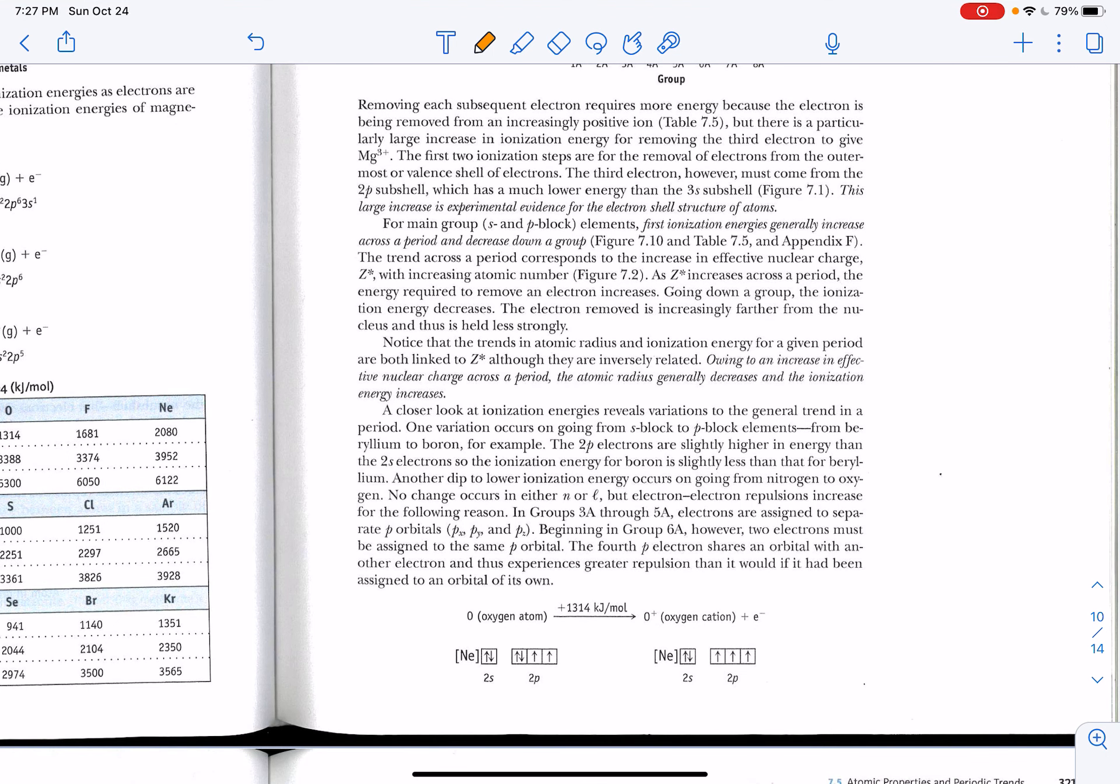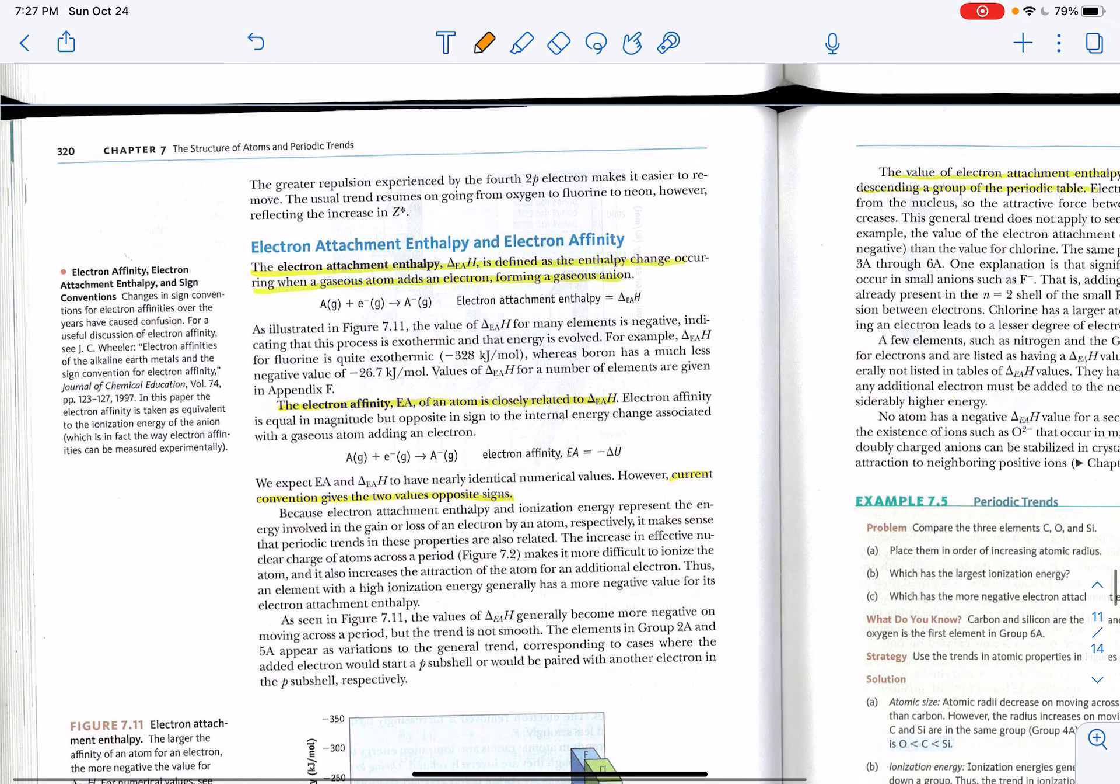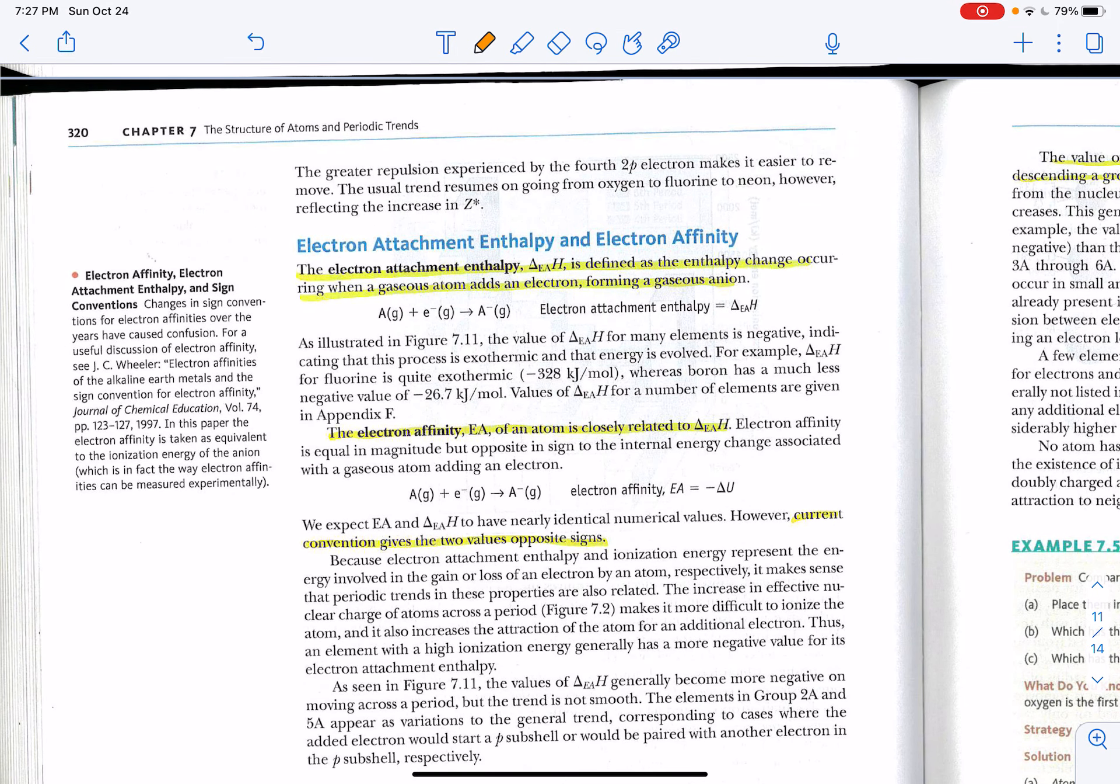So our trends are to increase from left to right. It takes more and more energy to rip off the electron because you have more and more protons tugging at it. And you're approaching an octet. And it becomes less and less energy as you go down the periodic table, because of the fact you're farther from the nucleus.